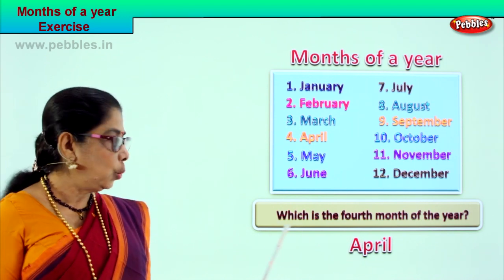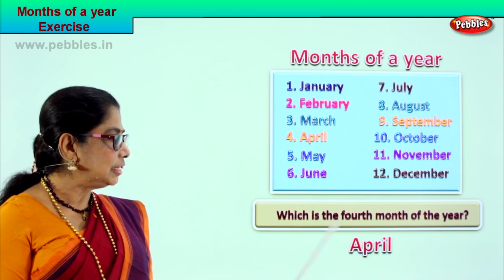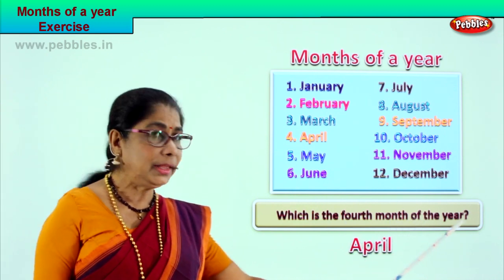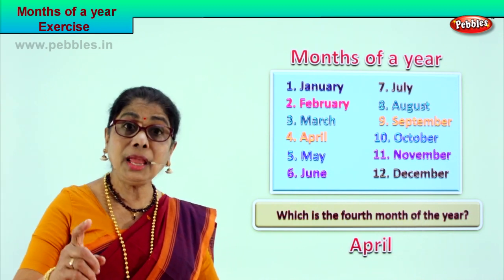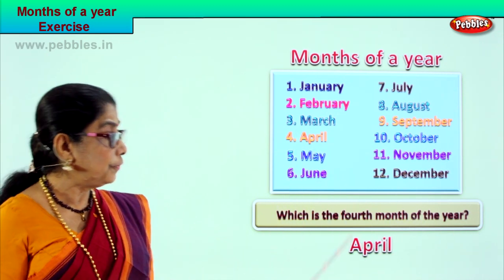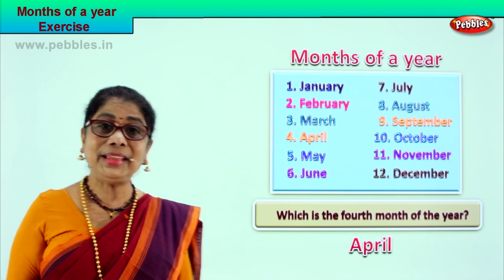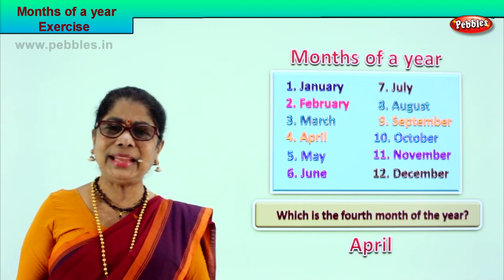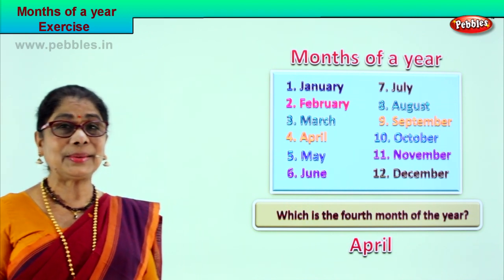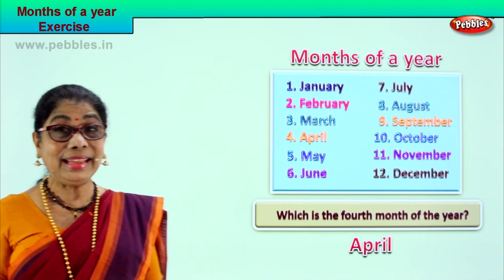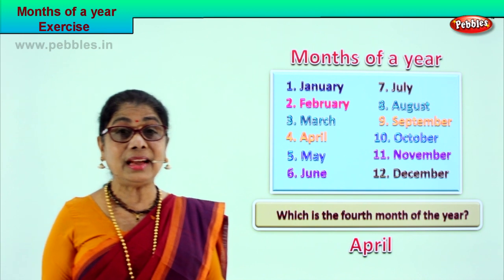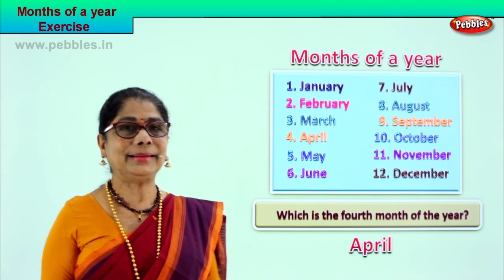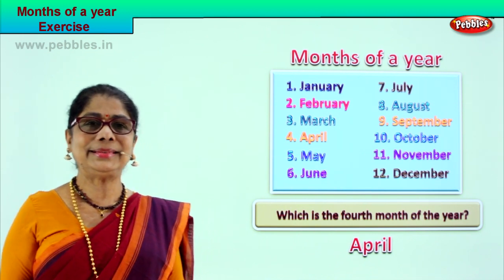Read: which is the fourth month of the year? April is the fourth month of the year. Did you enjoy the exercise — reading and finding the answer? Let's go to another exercise.